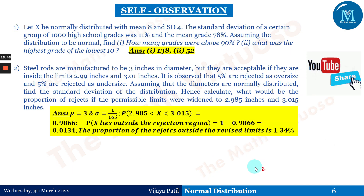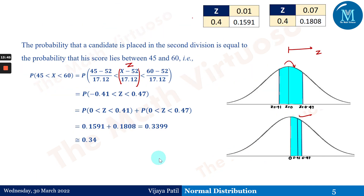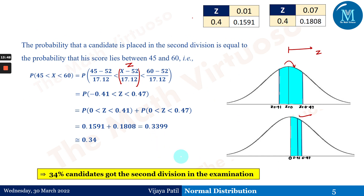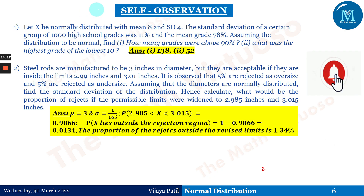In summary, for this problem we first found the values of mu and sigma using the given probabilities and the Z-table. This is the reverse of what we usually do — instead of using Z to find probability, we used the probability to find Z. That is the key technique demonstrated here.